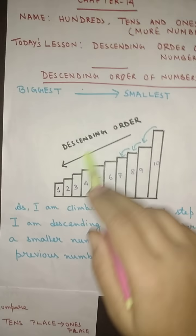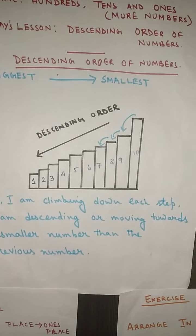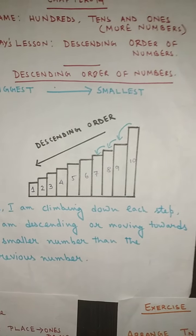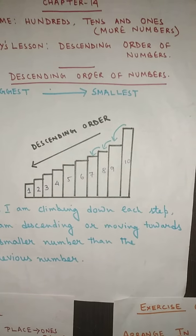Now this descending order of numbers you can very well understand if you follow this step diagram. I have drawn a few steps ranging from 1, 2, 3, 4, 5, 6, 7 and finally to 8. When I am climbing down each step, that means I am descending or moving towards a smaller number than the previous number.